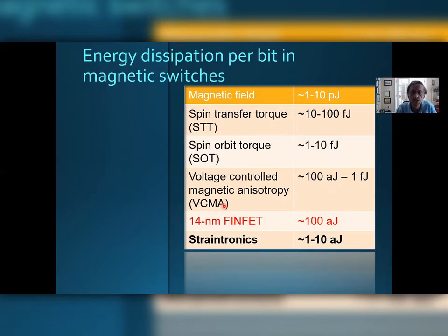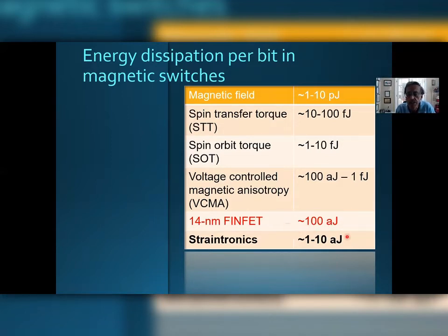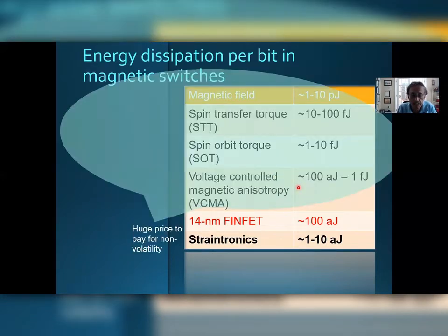There is also a voltage control mechanism — voltage control magnetic anisotropy — which is not current-controlled like the others. It is more energy efficient but still less energy efficient than a transistor. Modern day transistors dissipate about 100 attojoules of energy per switching event, and all of these magnetic mechanisms are much more dissipative than a transistor. So this is the price you pay for non-volatility — a huge amount of energy dissipation.